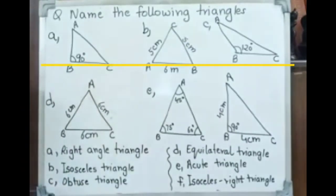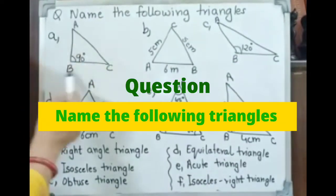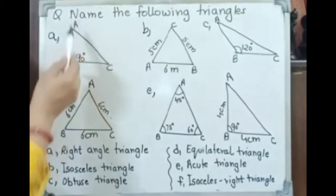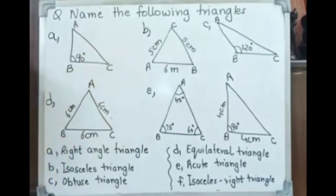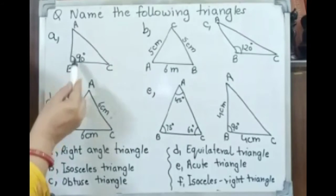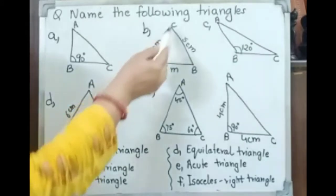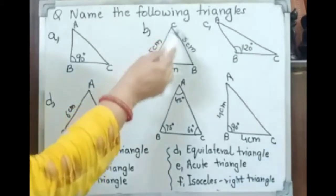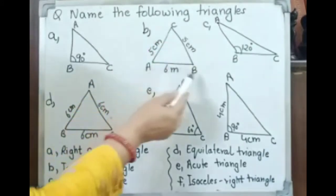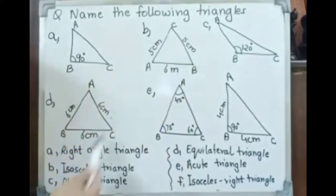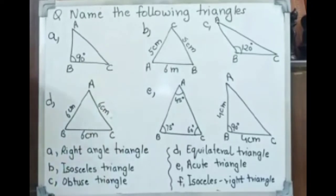Now, here we have named the following triangles. Triangle ABC has sides AB, BC, and CA. The angle is 90 degrees, so whenever one angle is 90 degrees, that is a right angle triangle. Next, triangle B has sides AC 5 cm, CB 5 cm, and AB 6 cm — two sides are equal, so that is an isosceles triangle.